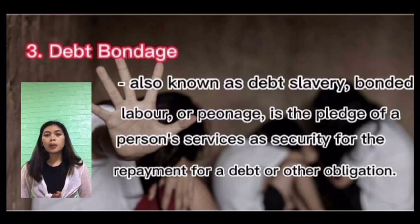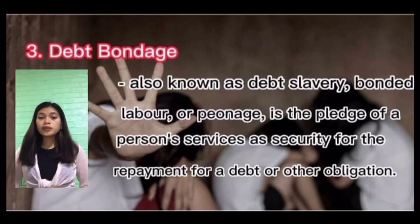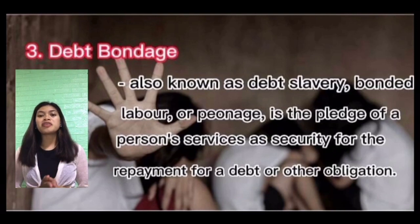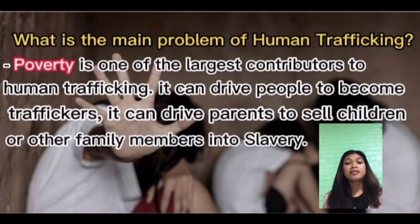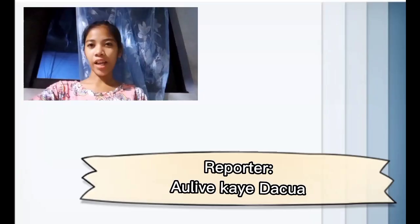The third type is debt bondage, also known as debt slavery or bonded labor — the pledge of a person's services as security for debt repayment. According to the U.S. Department of State, forced labor is the biggest sector of human trafficking in the world. The main problem driving human trafficking is poverty, which can drive people to become traffickers and can drive parents to sell children or other family members into slavery.